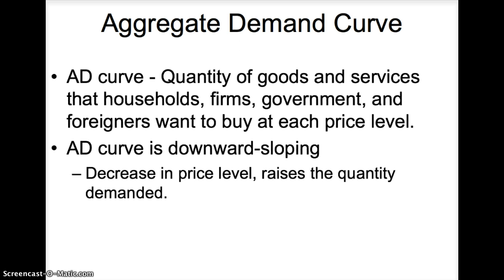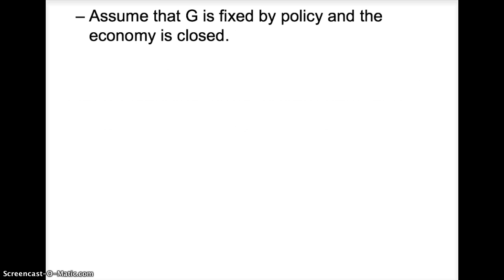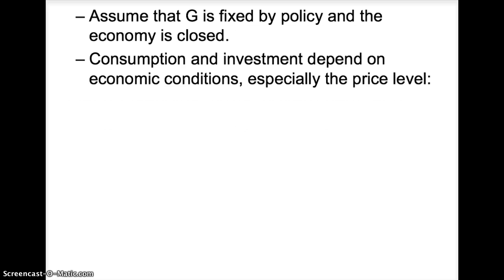To explain this relationship, remember the GDP equation Y = C + I + G + NX. Assume that government spending is fixed by policy and the economy is closed, so there are no exports or imports. This means that consumption and investment are the only variables that depend on economic conditions, especially the price level.